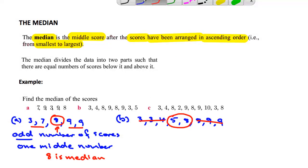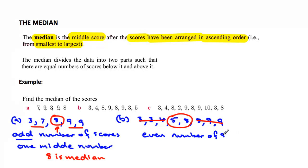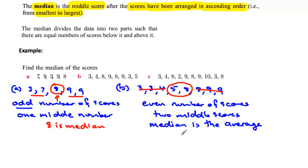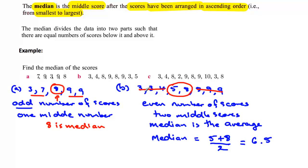What we need to remember is when we have an even number of scores, we get 2 middle scores. The median is the average of these 2 scores. The median is equal to the 2 scores added together — 5 plus 8 divided by 2 to get the average. In this case the median is 6.5. The 6.5 does not even appear in that list of numbers, but that is the median. The median would sit right in between those 2 numbers.